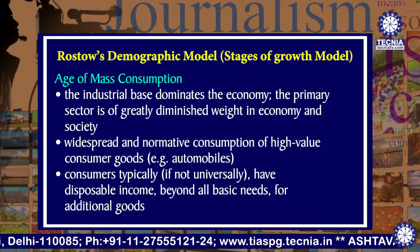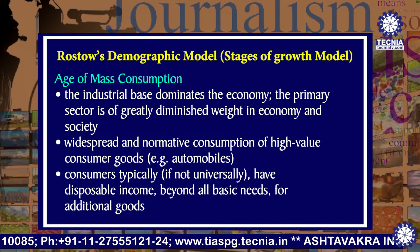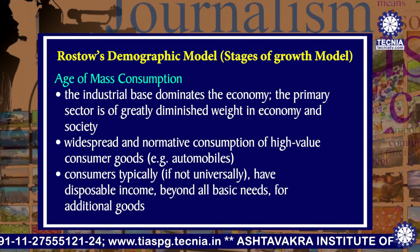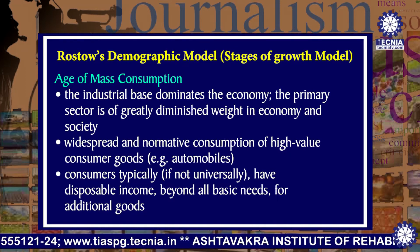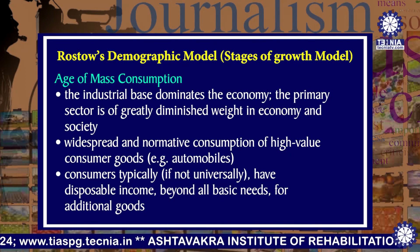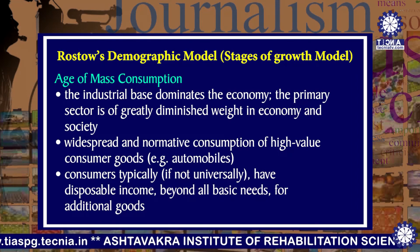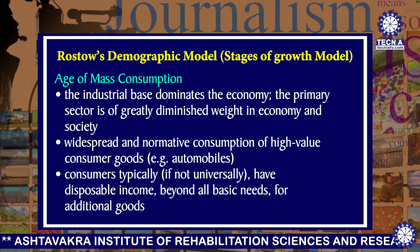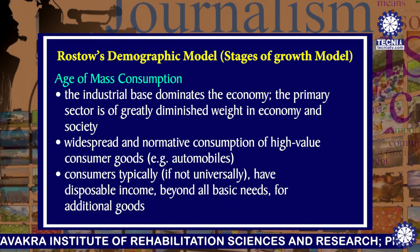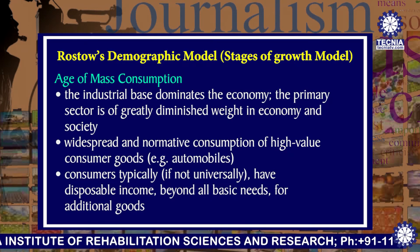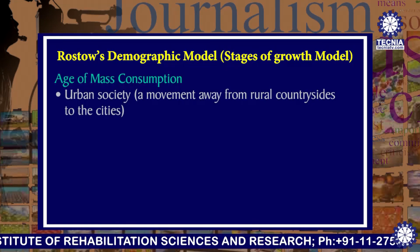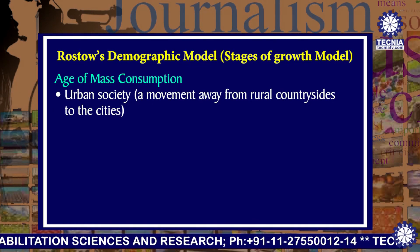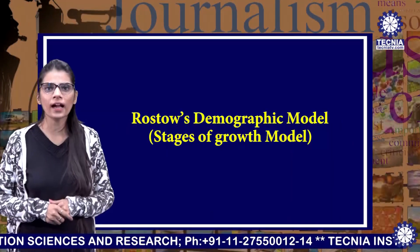Age of mass consumption: The industrial base dominates the economy. The primary sector is of greatly diminished weight in economy and society. Widespread and normative consumption of high-value consumer goods, for example automobiles. Consumers typically, if not universally, have disposable income beyond all basic needs for additional goods. Urban society — also a movement away from the rural countryside to the cities. I hope you understand the lecture.